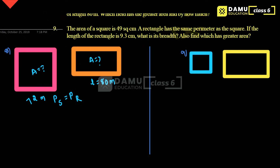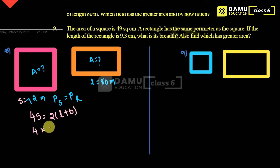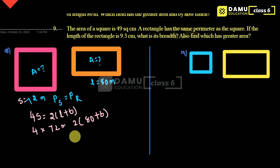So we can start writing the solution. The side is 72 meters. Perimeter of square is 4 into S, that is 4S. Perimeter of rectangle is 2 into L plus B. We know 4 into S is 72 meters, and we know length is 80, but breadth we don't know — we have to find this.